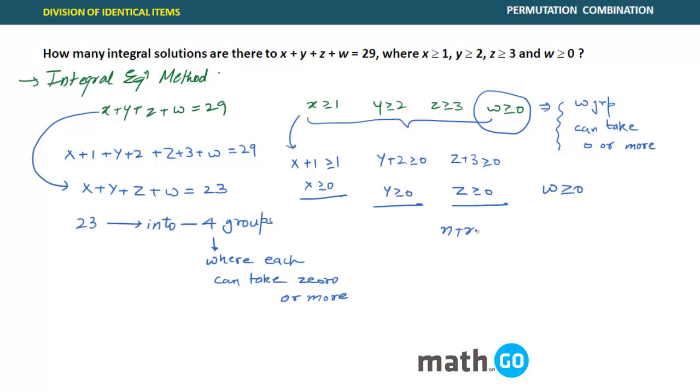The answer is n plus r minus 1, C r minus 1. This is how we are going to use. So the answer becomes 23 plus 4 minus 1, C 4 minus 1. So this becomes what? 26 C 3. This is the answer. I hope this is clear now.